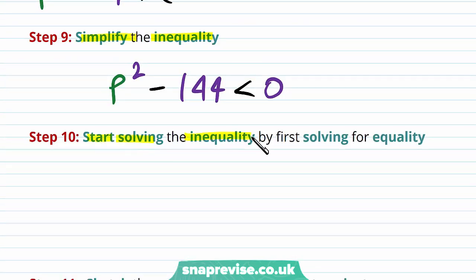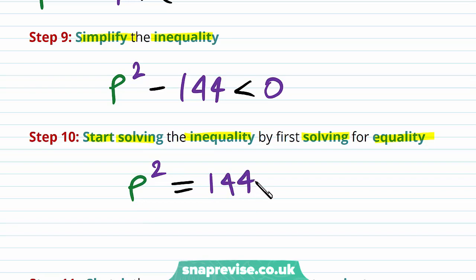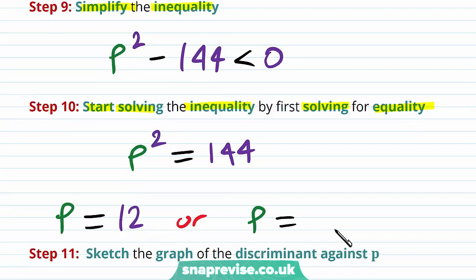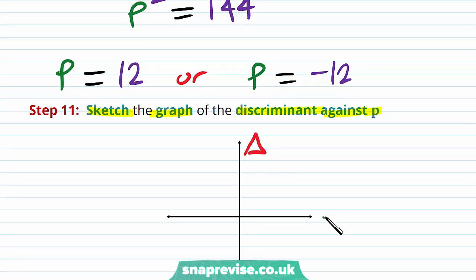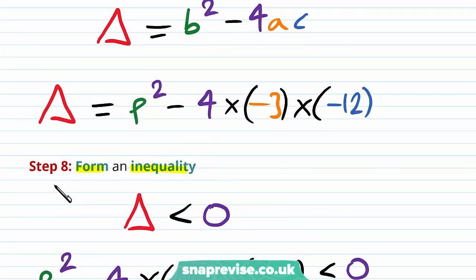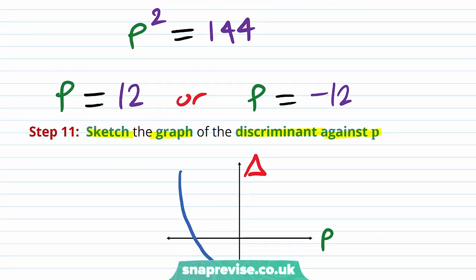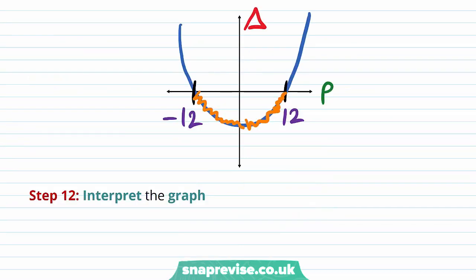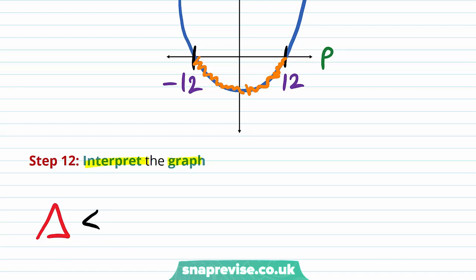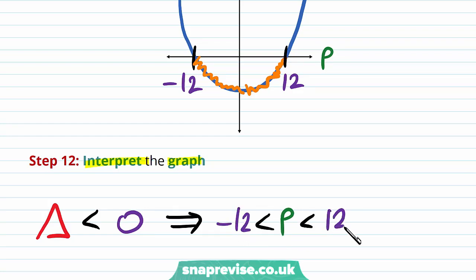To start solving the inequality, first solve for equality: p squared equals 144, giving p equals 12 or p equals minus 12. Sketching the graph of the discriminant delta equals p squared minus 144 against p, we get an upward parabola with zeros at minus 12 and 12. We're looking for delta strictly less than zero, which is the section between those roots. Interpreting the graph: p must be strictly between minus 12 and 12.